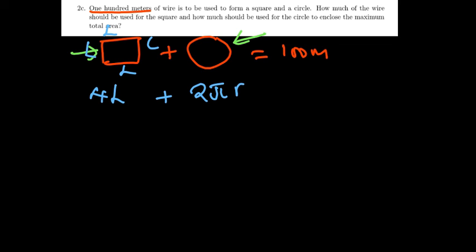Or πD. We'll use radius here. So that's our first equation. Now the other equation, they want us to ensure that we have the maximum total area. So the area of the square is going to be L times L, which is L squared. The area of a circle is πr squared.